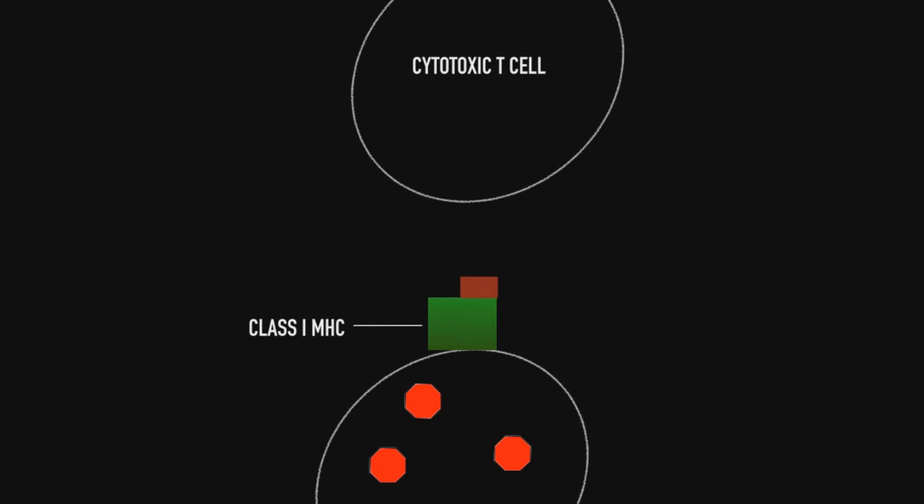What we get is something called a Class 1 MHC molecule. MHC is short for Major Histocompatibility Complex, and basically what that means is it's a mechanism that differentiates between self and non-self in an organism. These molecules take a fragment of the PMW virus and bring it to the surface of the cell so that the cytotoxic T-cell can recognize it.